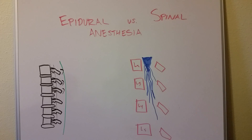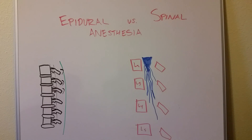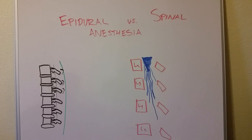Another important thing about spinal anesthesia is that you cannot — or should not — inject it above the L2-L3 region. We'll go into the anatomical reason for why that is, but that's one key difference. Whereas an epidural can be given anywhere along the spinal column. Because you're injecting right into that space around the spinal cord, you can also use a smaller dose of drugs, and you typically only give one shot.